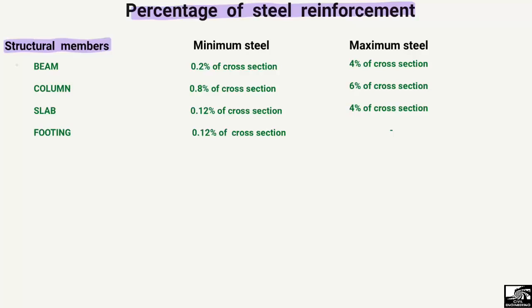Here are the four important structural members: beam, column, slab, and footing. We have to determine the minimum and maximum steel reinforcement for each of these structural members according to the Indian Standard IS 456. The IS code provides minimum and maximum reinforcement percentages for these structural members.